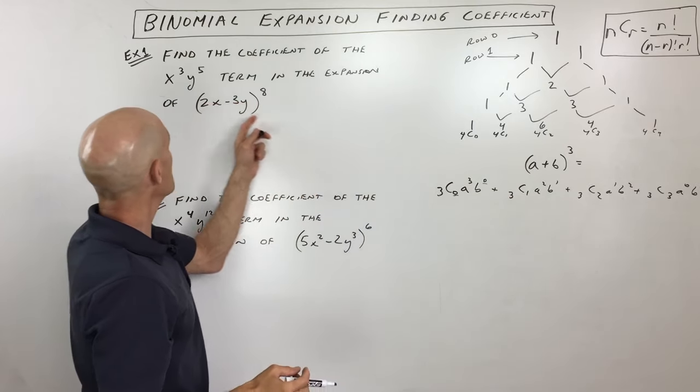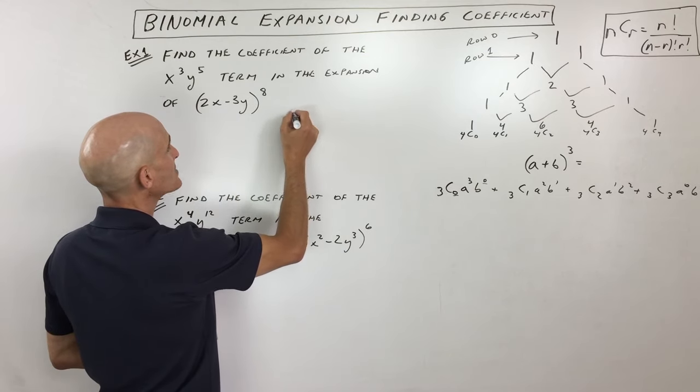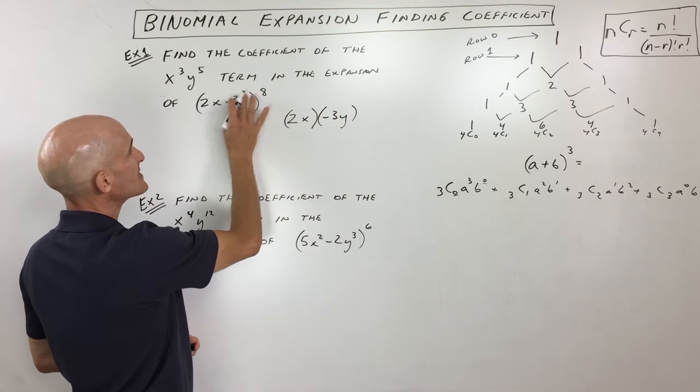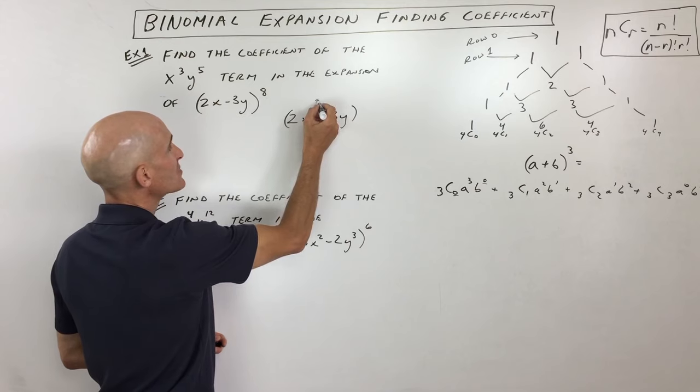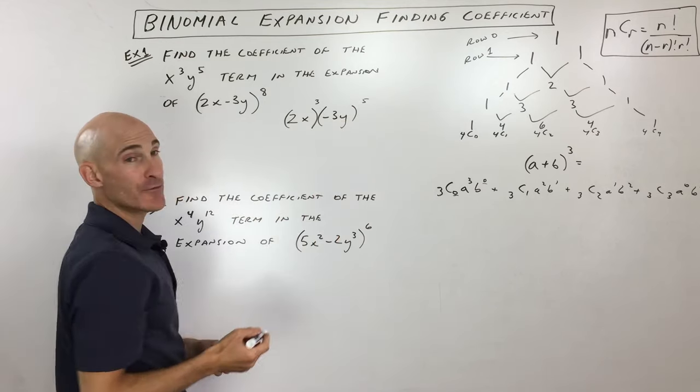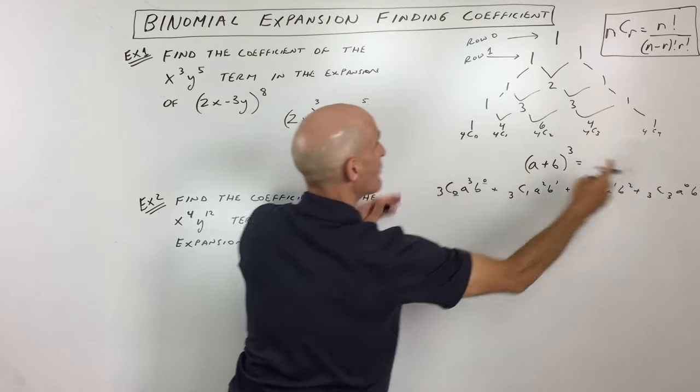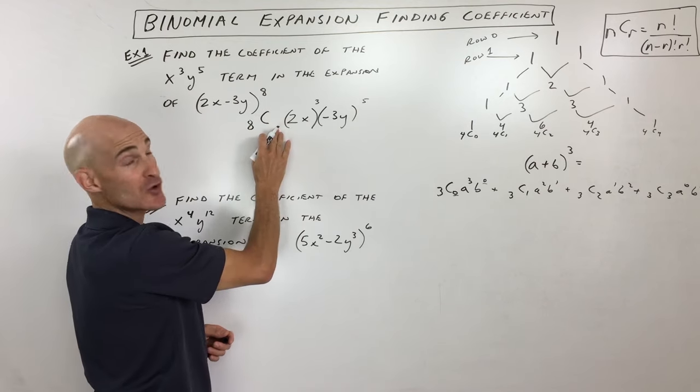So I'll show you over here. So, for example, (2x minus 3y) to the 8, we can see that our two terms are 2x and negative 3y. Now, I'm capturing this minus as a negative 3y. And then we want this to be x cubed, so I'm going to make this to the third power. I'm going to make this to the fifth power to give us y to the fifth. Now, notice we're on the eighth power. So that's the eighth row. If we were to expand this down Pascal's triangle, this is going to be 8 choose. What do you think goes here?